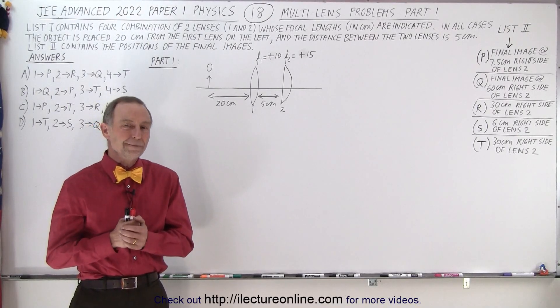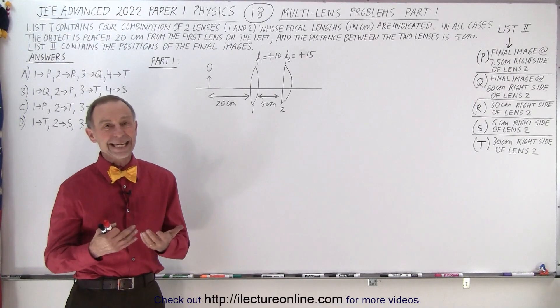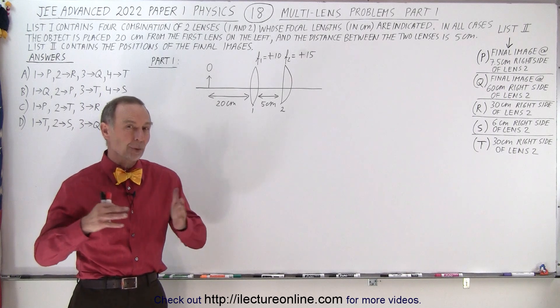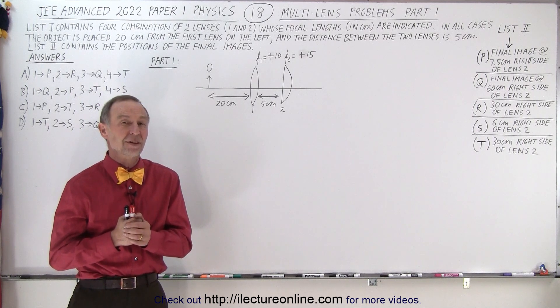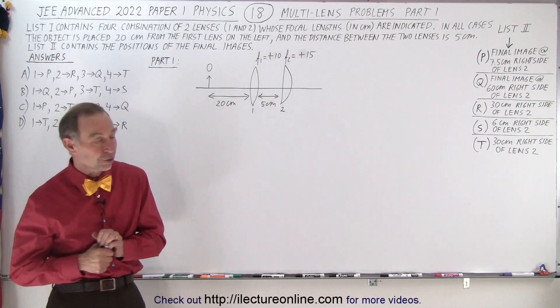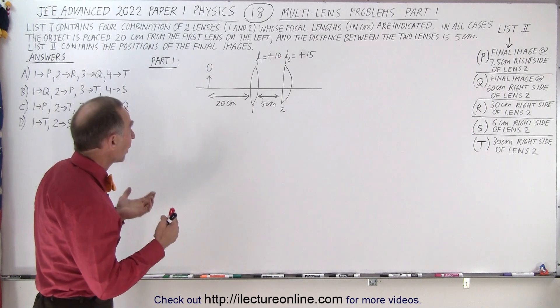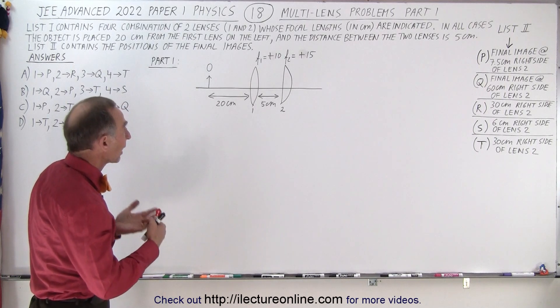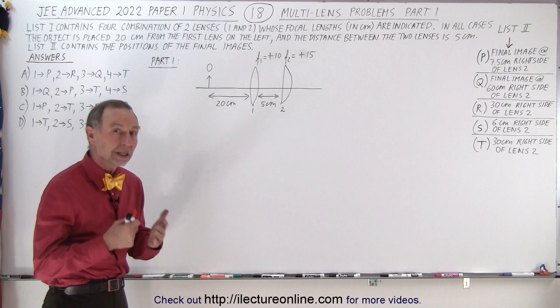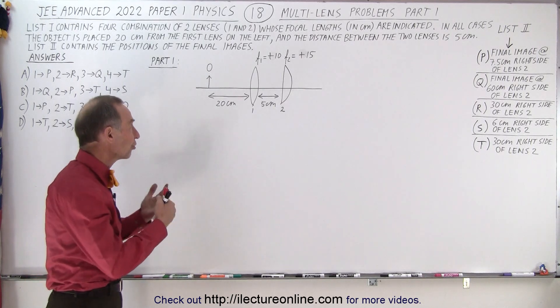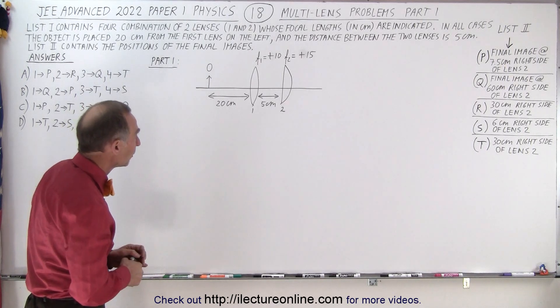Welcome to iLectureonline. Here's problem number 18, the last one of the physics portion of the JEE Advanced test, paper one of 2022. This problem deals with multi-lens situations. You have two lenses in each of the four systems that we'll bring before you for parts of the problem.